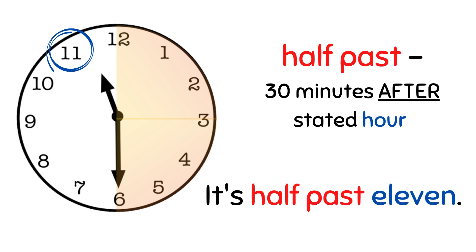If you see the word 'half,' half means separuh — half of one hour is 30 minutes. So 'half past' means 30 minutes after the stated hour. Like this picture: the time shown is approaching 11, and the minute hand has passed 30 minutes — so it's half past eleven.